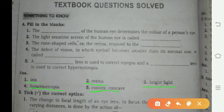A concave lens is used to correct myopia, and a convex lens is used for hypermetropia.